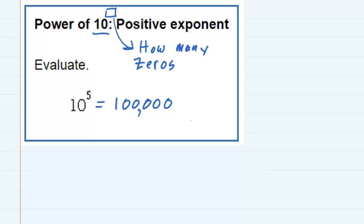If this number would have been something different, a 6 or a 7, then I would have put 6 or 7 zeros behind the 1 so that I can evaluate it. So a nice shortcut when we're looking at powers of 10 with positive exponents.